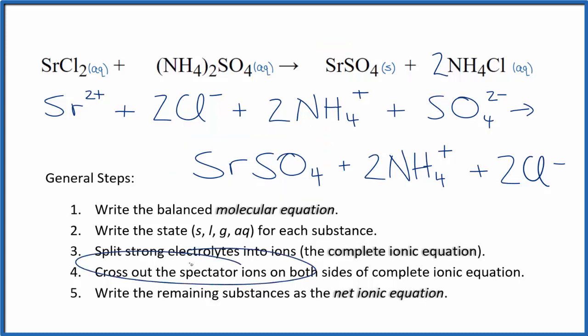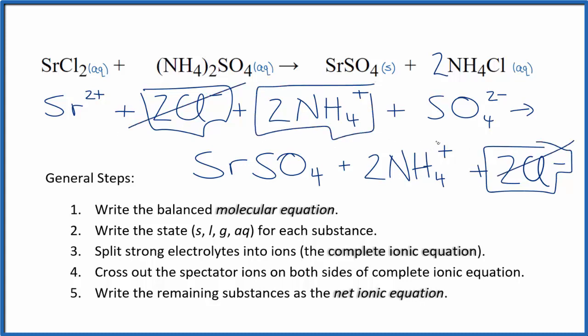Now we can cross out the spectator ions. They're on both sides. In the reactants, I see I have two of these chloride ions, and in the products, these are spectator ions. Cross those out. Two ammonium ions, and then again in the products, two ammonium ions. Spectator ions.